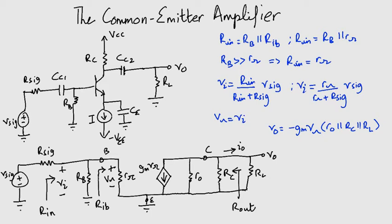We can write an expression for V0. This is minus GM VPI multiplied by the parallel combination of R0, RC, and RL, that is their effective resistance. Now why the negative sign? This is because the current I0 is opposite in direction to GM VPI. Now substituting VPI with VI, we can find the voltage gain. There you go.